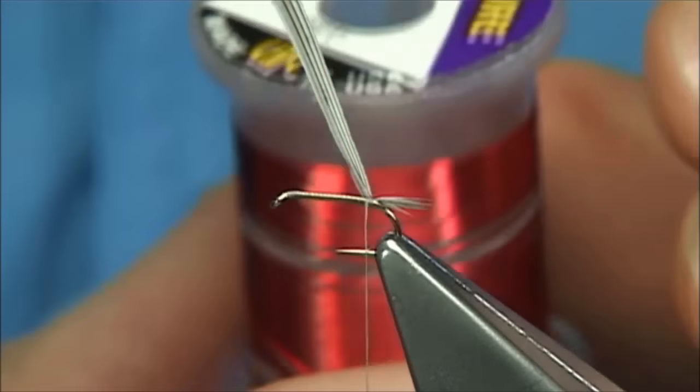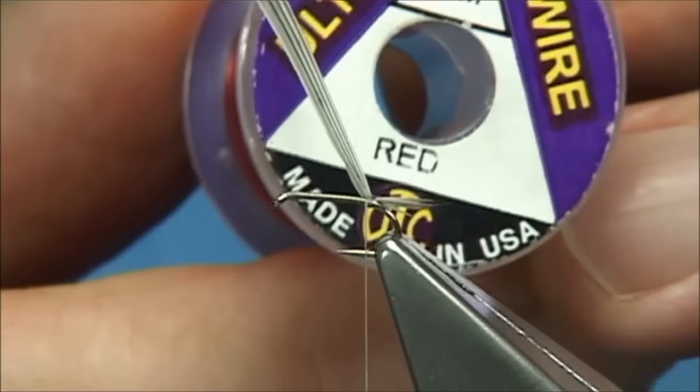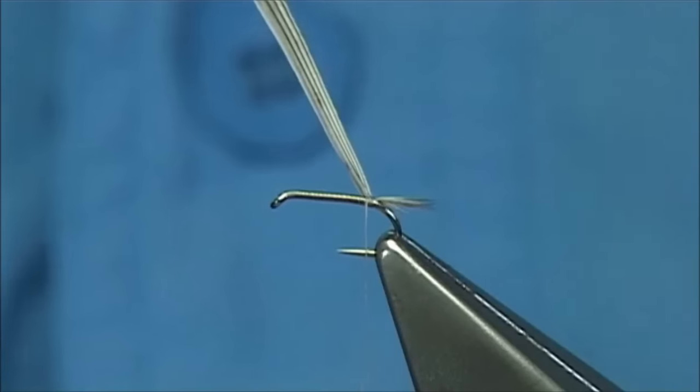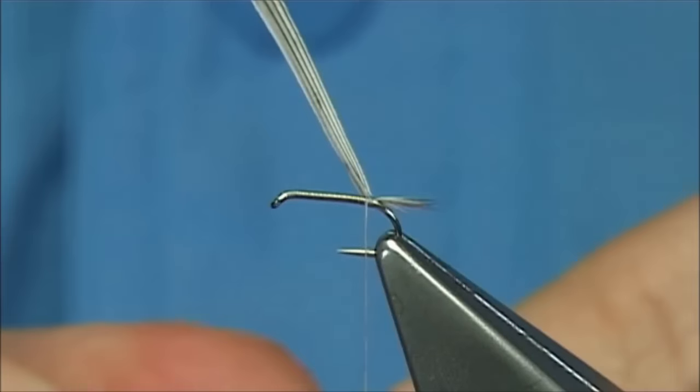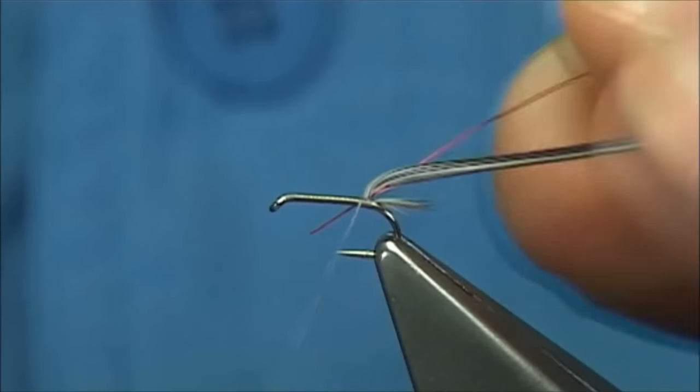Now the wire I'm using is an ultra wire, a UTC. In this case it's an extra small in red. Red wire was originally used, as far as I believe, on the original grey goose. It was grey-like goose that was used.